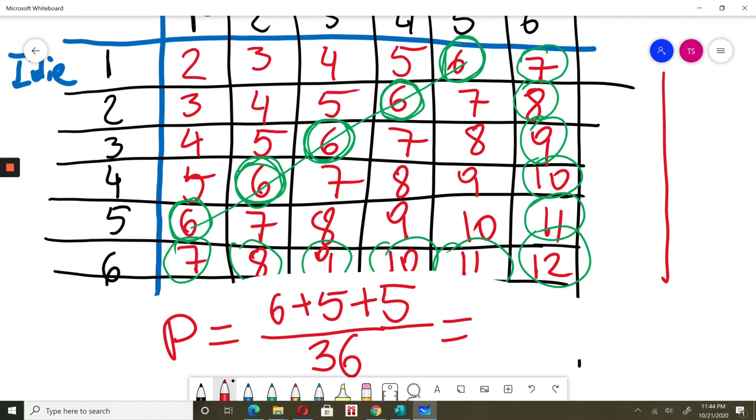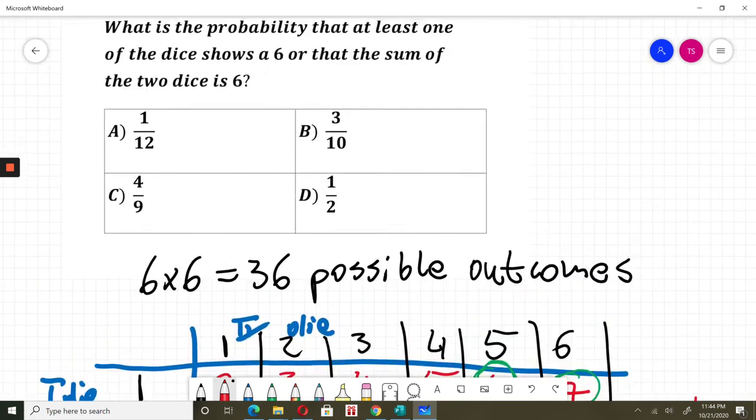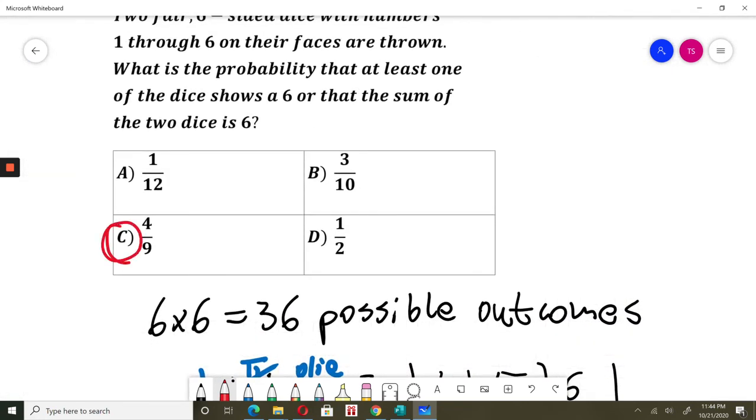6 plus 5 plus 5, that will be 16 divided by 36, simplified by 2. So it's 8/18, simplified by 2, it's 4/9. So the answer, that probability will equal 4/9. The answer for this question is C.